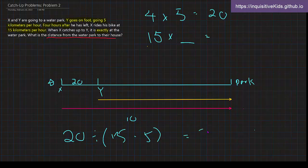20 divided by 10 equals 2, which means that their time spent catching up is 2 hours. 2 hours. So this part is 2 hours.